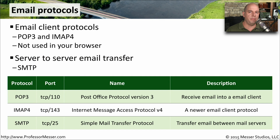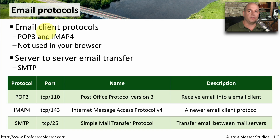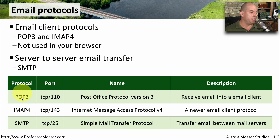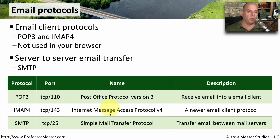We use many different protocols to transfer email between devices. If you're running an email client like Outlook or Thunderbird, you'll use POP3 or IMAP4. If you're using browser-based email like Gmail or Yahoo Mail, you're using HTTP or HTTPS. When email servers communicate with each other, that traffic is sent as SMTP. POP3 — Post Office Protocol version 3 — uses TCP port 110. IMAP4 — Internet Message Access Protocol version 4 — uses TCP port 143. SMTP — Simple Mail Transfer Protocol — communicates over TCP port 25.